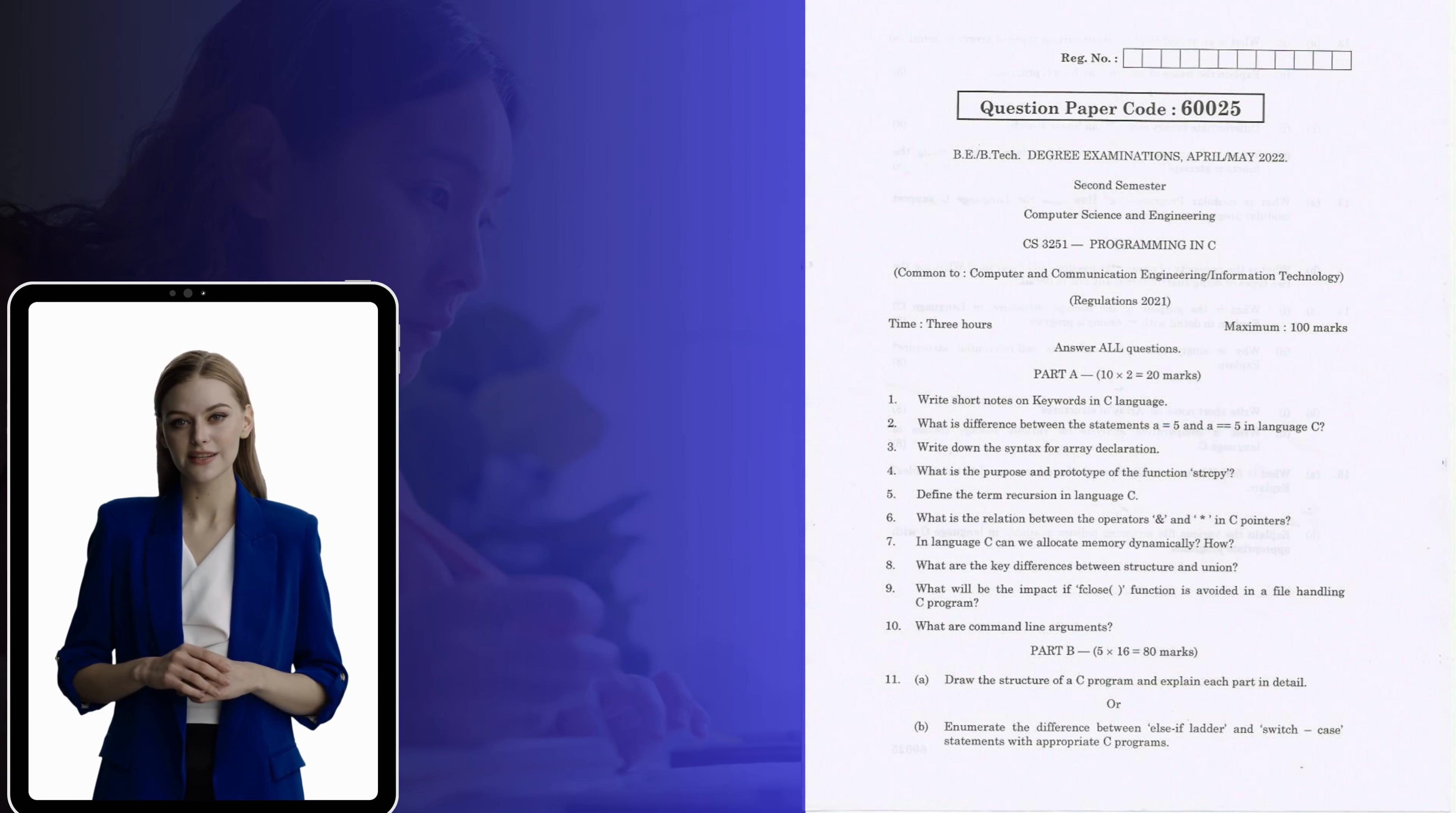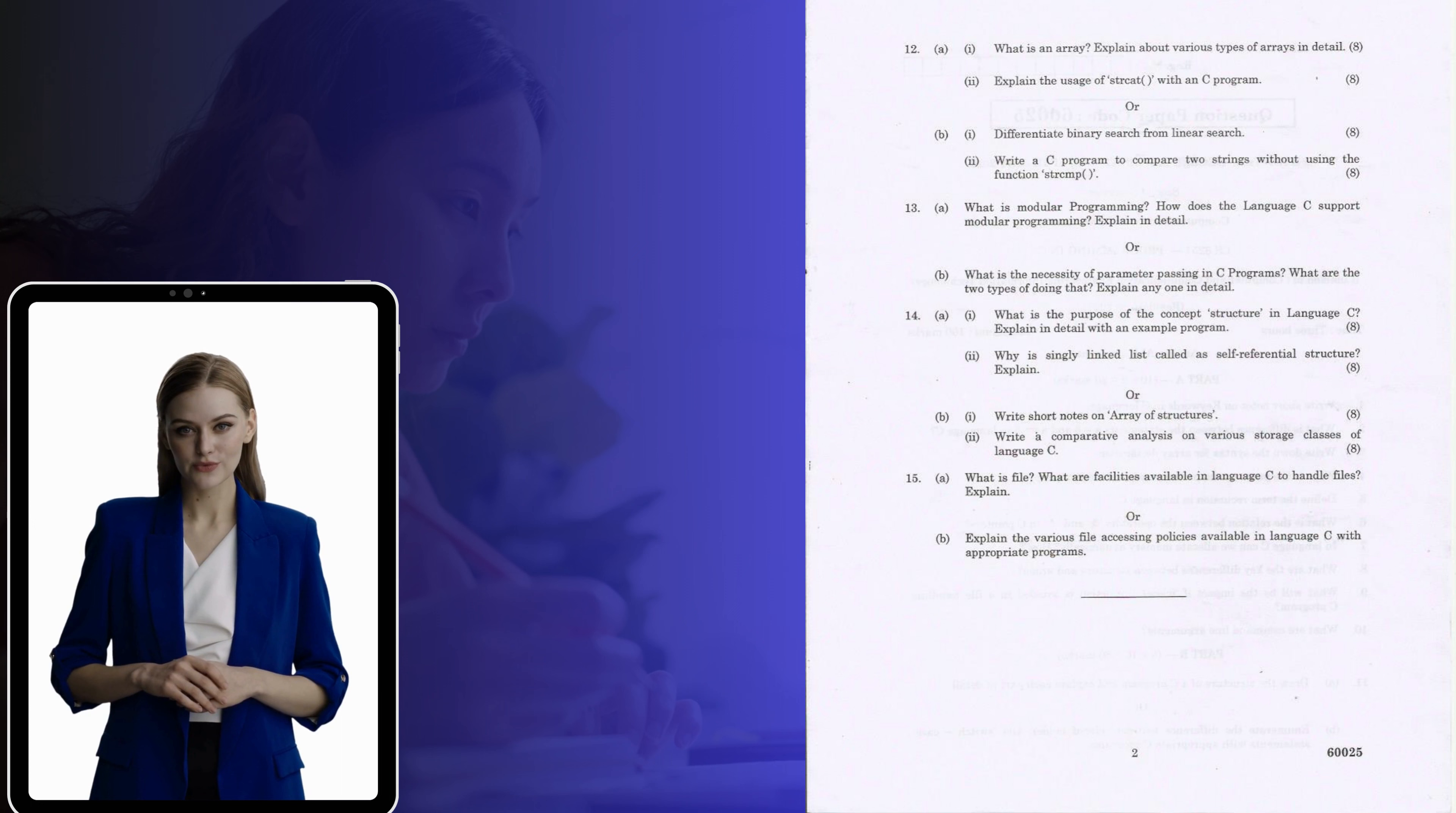Next, let's move on to Part B, 16 marks. 11 A. Draw the structure of a C program and explain each part in detail. Or B. Enumerate the difference between else-if ladder and switch case statements with appropriate examples.